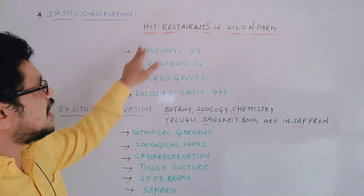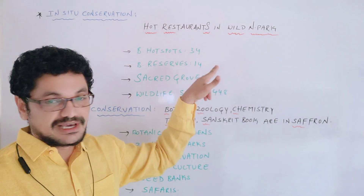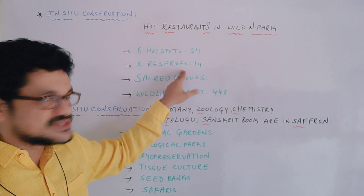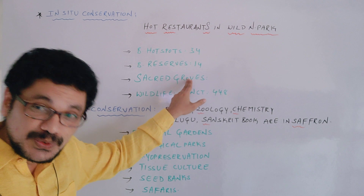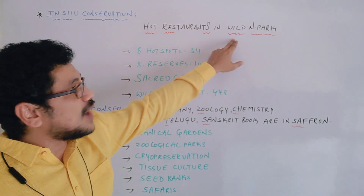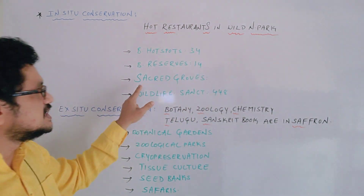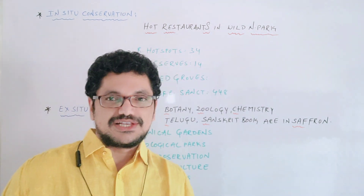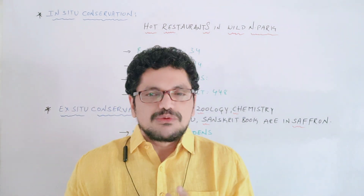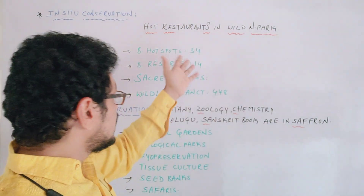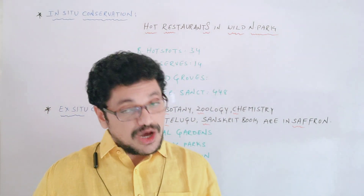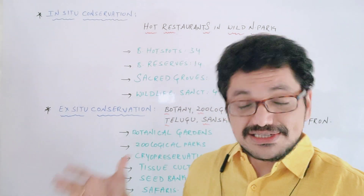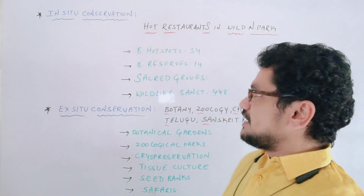What do you mean by 'Hot'? Hot means biodiversity hotspots. 'RES' — restaurants — means biodiversity reserves. And 'Wild' means wildlife sanctuaries. So these are all the simple ways to remember the techniques under in-situ conservation. There are different techniques which come under in-situ conservation.